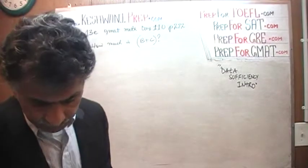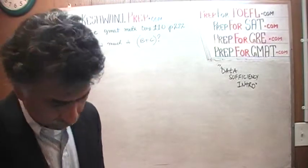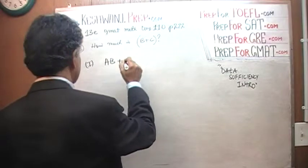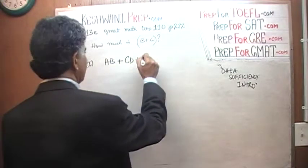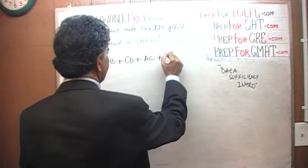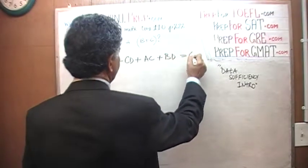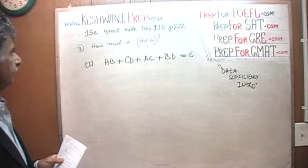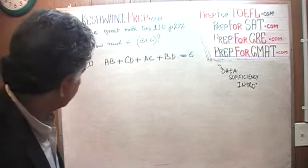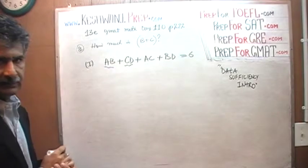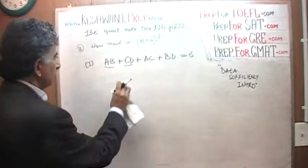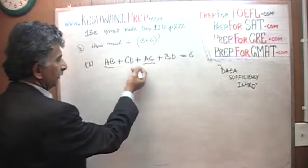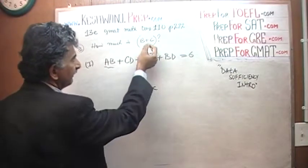Let's see what they gave us in the first statement. In the first statement they tell us that a times b plus c times d plus a times c plus b times d equals 6. Now notice: in the first term we have ab and here we have cd — there is nothing common there. But if you compare the first term ab and ac, we can take out a common, and we will be left with b plus c, which is exactly what we are looking for.